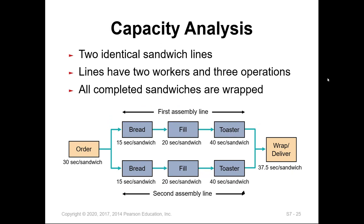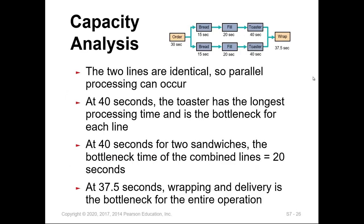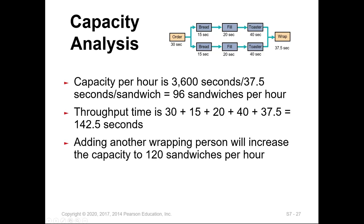This slide shows an example of two identical lines with two workers and three operations. Using capacity analysis, we can identify five different workstations from order intake all the way to wrapping and delivery. The two lines are identical, so parallel processing can occur. At 40 seconds, the toaster has the longest processing time and is the bottleneck for each line. When combining the two lines and assuming workers can use any available toaster, the time becomes 20 seconds per sandwich, moving the bottleneck to the wrapping and delivery station at 37.5 seconds. Capacity per hour is 96 sandwiches.